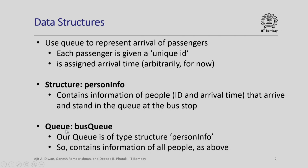Next we require a queue which we call the bus queue. Our queue is of the type struct PersonInfo, because each person standing in the queue is represented by an artificial ID and an arbitrary arrival time. So the queue will be of type structure and contains information about all the people as described.